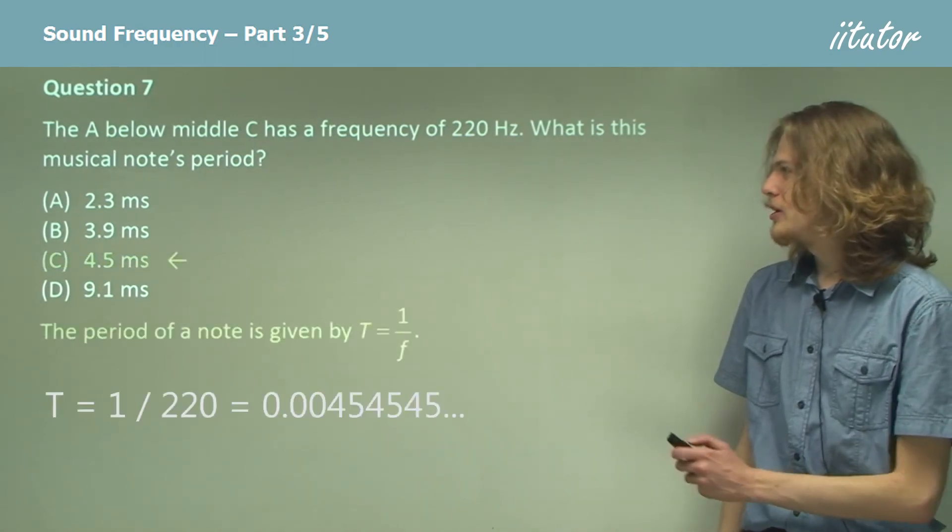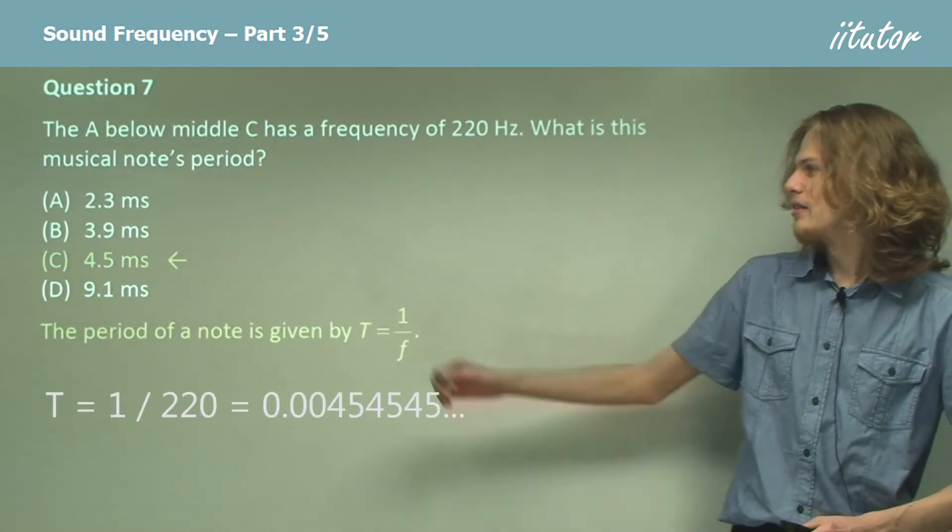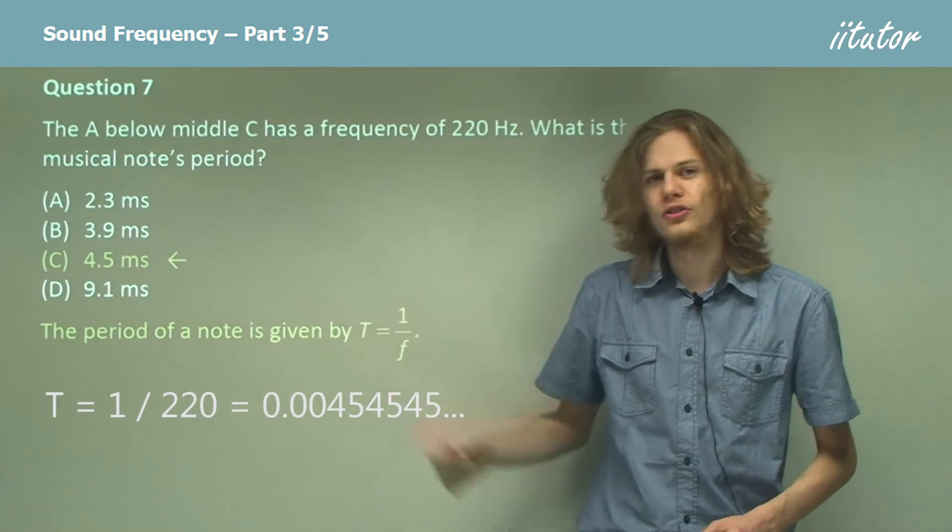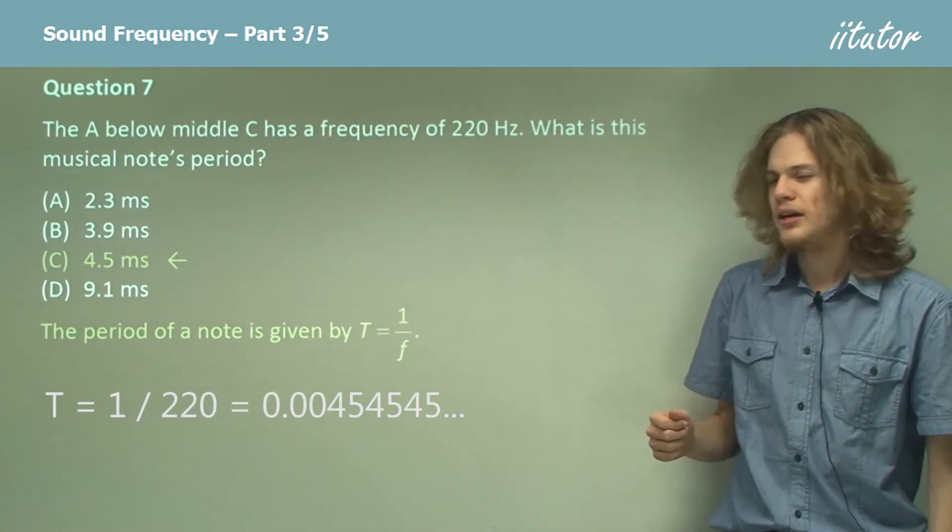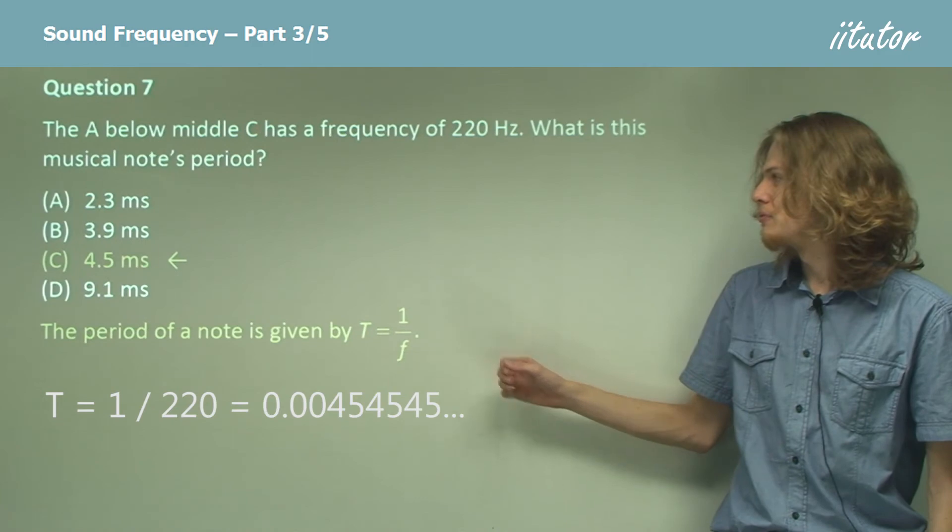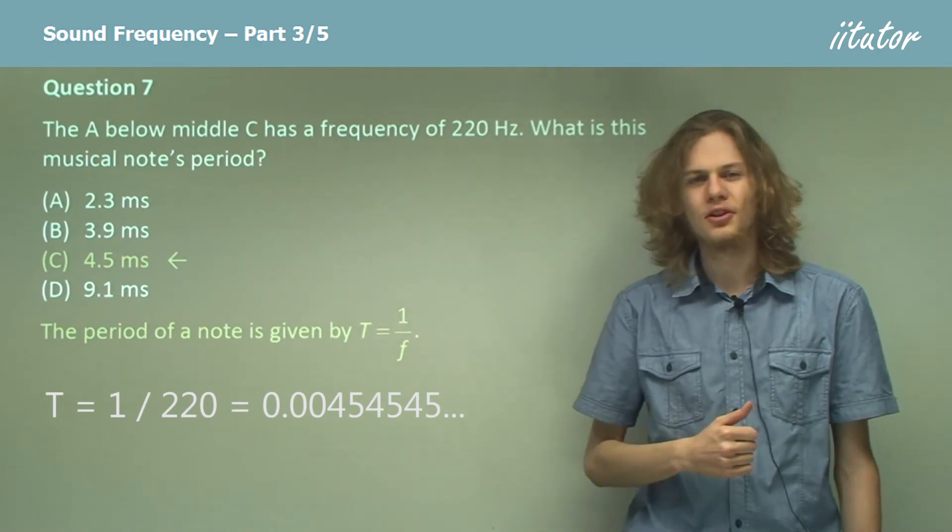So that will tell us pretty easily that the period of this musical note, the A below middle C, is going to be 1 on F, or 4.5 milliseconds.